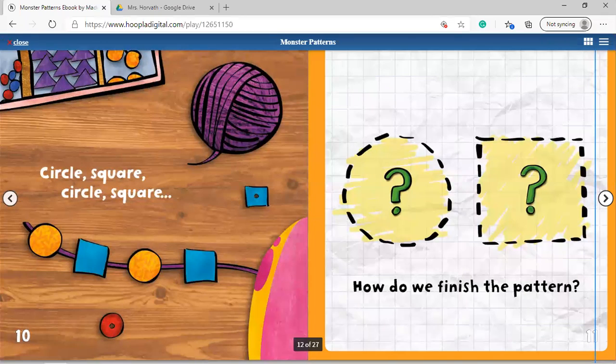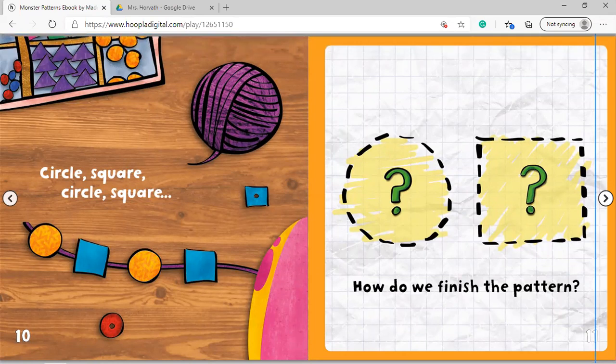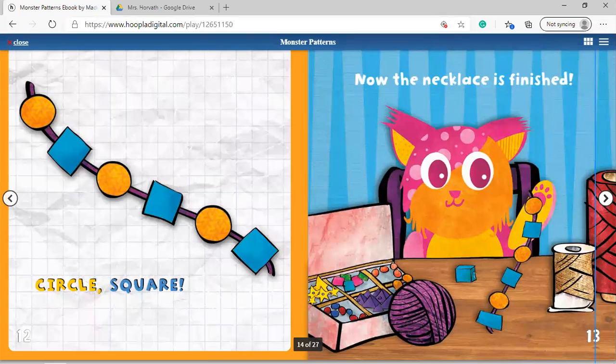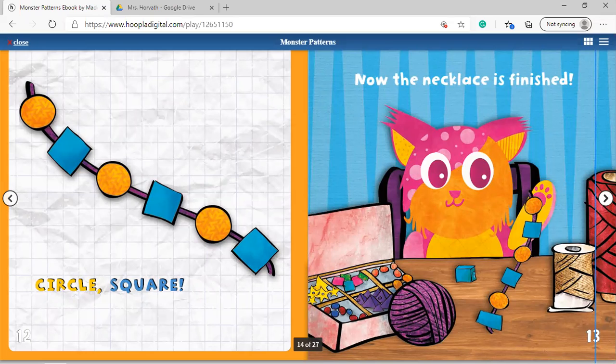Circle, square, circle, square, how do we finish the pattern? Circle, square, now the necklace is finished.